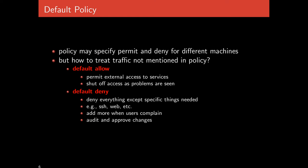If traffic isn't explicitly allowed or denied, the question is how to handle it. There are two default policies: the first is default allow — any traffic not explicitly mentioned is permitted. The alternative is default deny — anything not explicitly mentioned is denied.